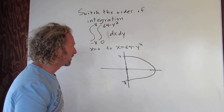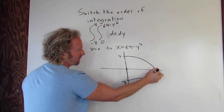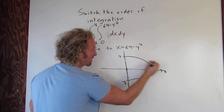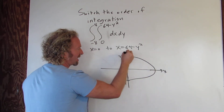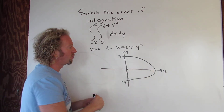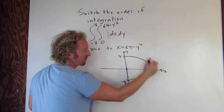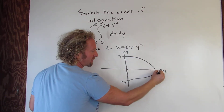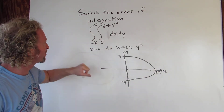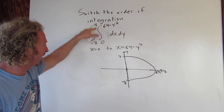We can also find the rightmost point. This is on the x-axis, so y is 0. When y is 0, we get x equals 64. So that point is (64, 0). We've managed to draw the region, and the outer limits go from negative 8 to 8.